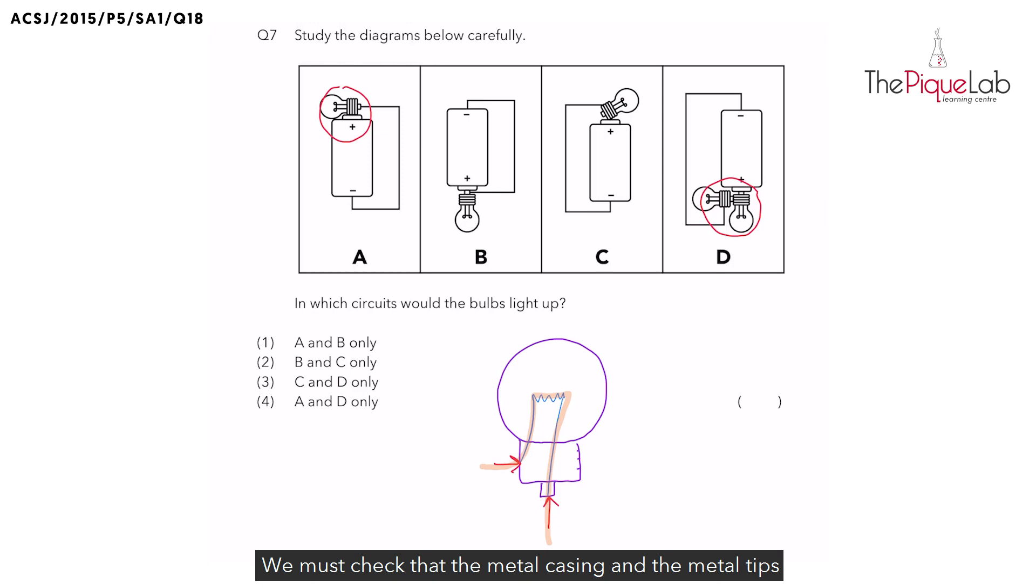We must check that the metal casing and the metal tips of the bulbs are connected to the circuit. So let's take a look at option A. Metal casing of the bulb is touching the battery and metal tip is touching the wire. Can electricity flow through the filament of the bulb? Yes, it can. Will this bulb light up? Yes, it will.